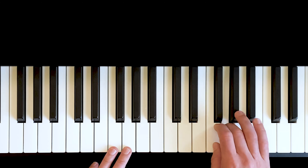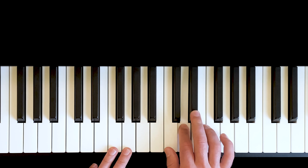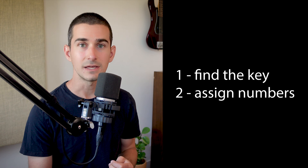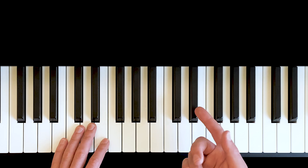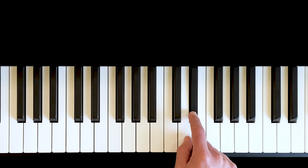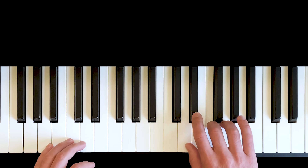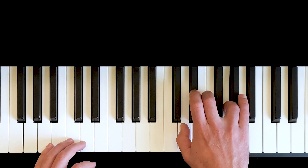Let's look at how we can take any melody and assign numbers to it. We'll do this with My Country Tis of Thee. Step one: figure out what key it's in. Step two: number the notes of the melody based on where those notes are in the scale. I played this melody starting and ending on E flat. It's helpful to look at all of the notes you use in the melody — D, E flat, F, G, and A flat. There is only one major scale that uses all of those notes: E flat major.